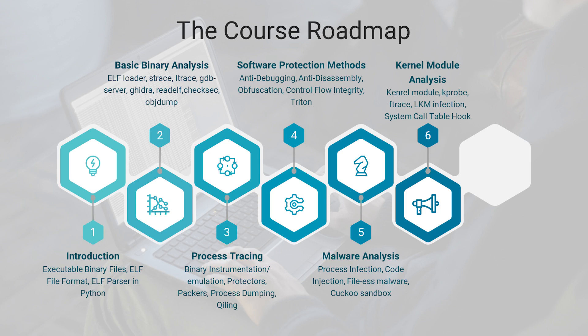Section 4 will cover most of the protection methods used in commercial software products or personal tools where the owner doesn't want their secrets revealed. Some techniques include obfuscation at the binary level. All software protection methods are a double-edged weapon — good guys might use them to protect their products against crackers and reverse engineers, but bad guys might use them in their malware to make detection and analysis more difficult.